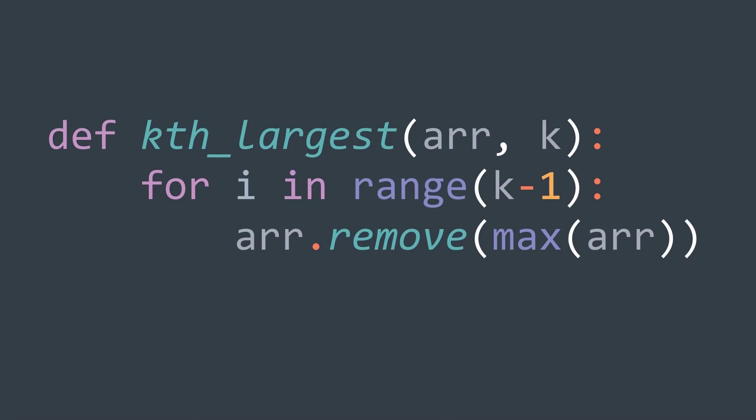In code, we have a for loop that is repeated k-1 times, where we remove the maximum element. After the loop, we return max of arr, that's it.